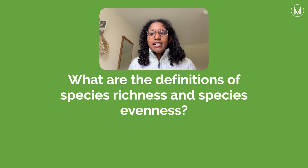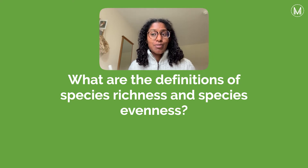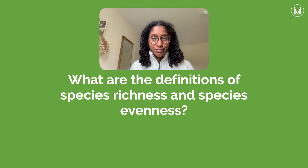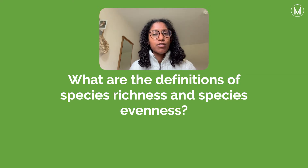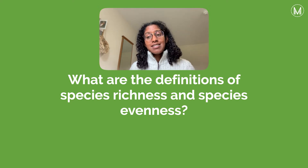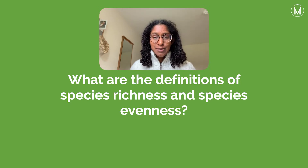Let's recap the different definitions of species richness and species evenness — we talked about them in our last tutorial. Species richness is looking at the number of species present within a population. And species evenness is actually looking at the number of individuals within each of those species.